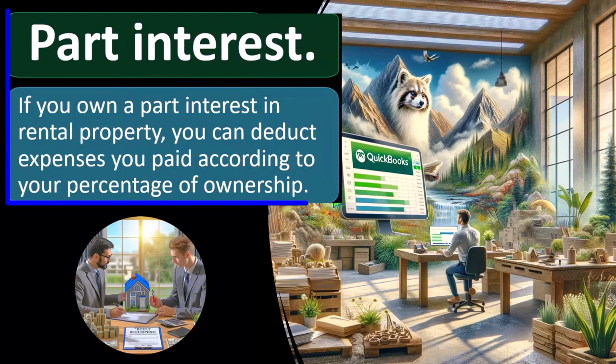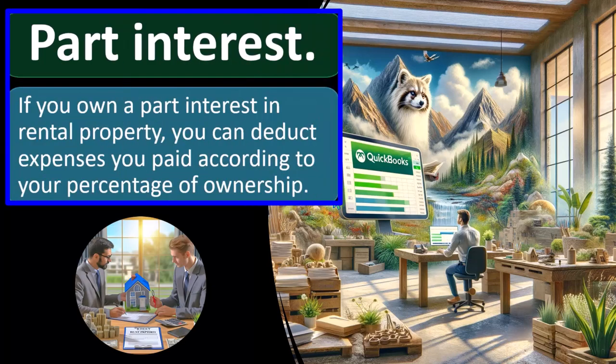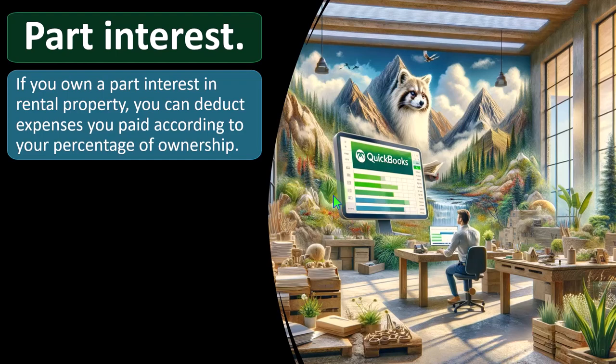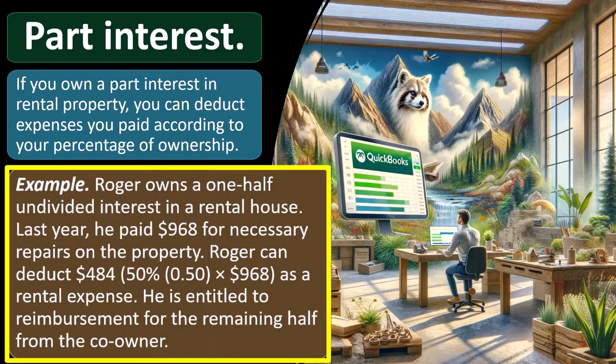Part interest: if you own a part interest in rental property, you can deduct expenses you paid according to your percent ownership. If a separate property has multiple owners, you'll need to allocate income and expenses between owners — possibly through a partnership, where the partnership return calculates total net income flowing through to individual Form 1040s via K-1s. You need to split out the income and expenses allocated to you in a joint ownership situation.